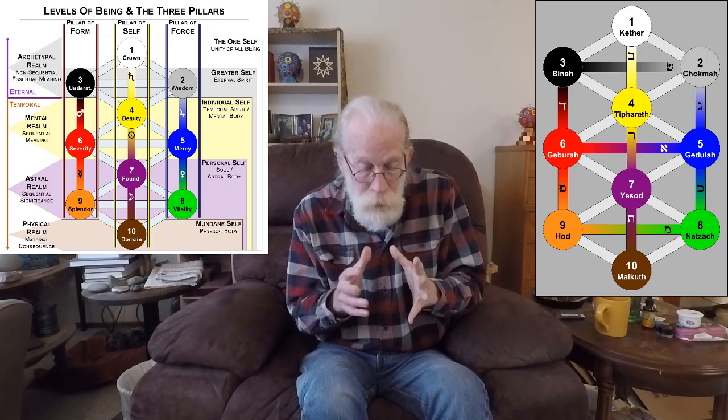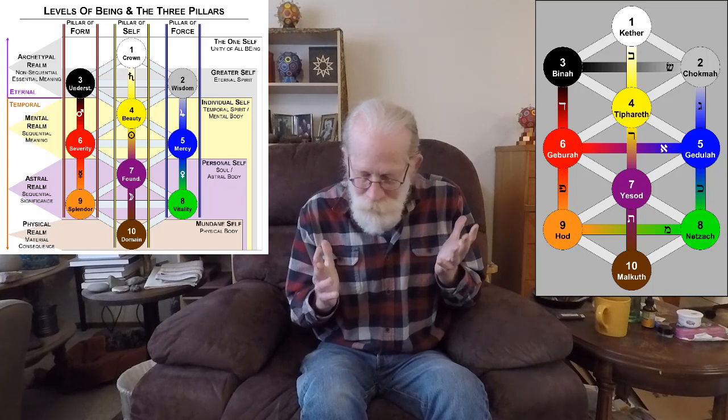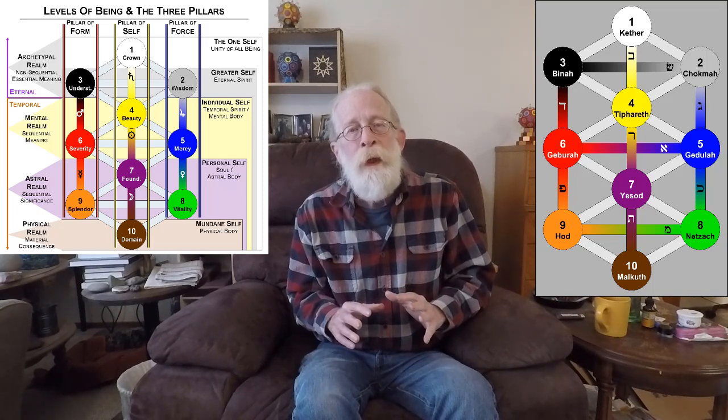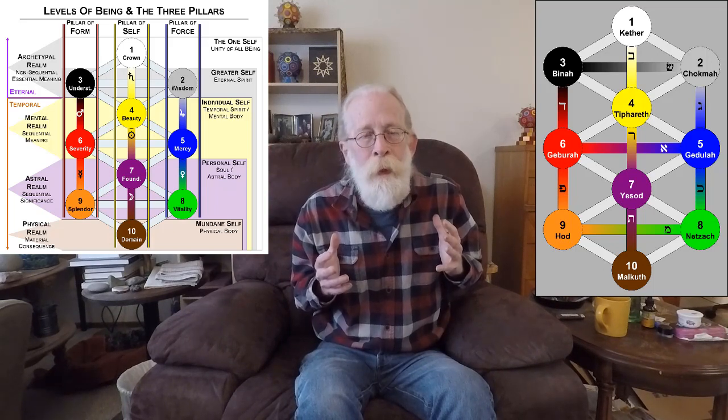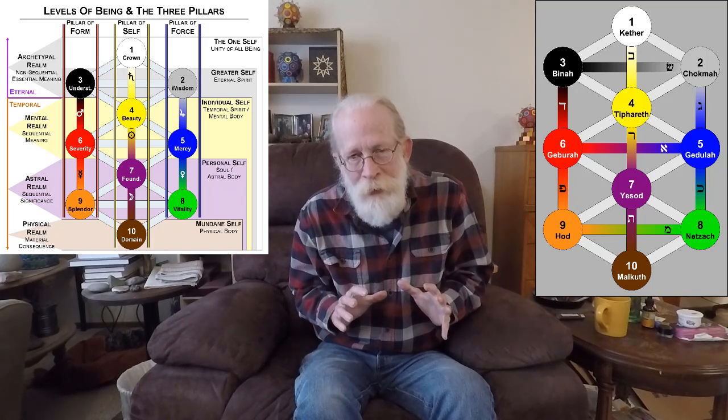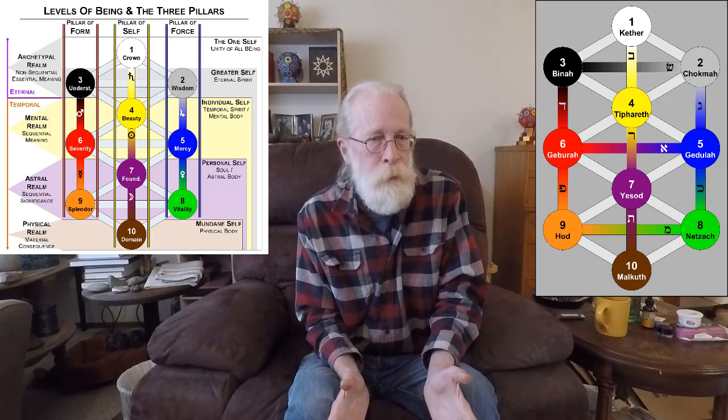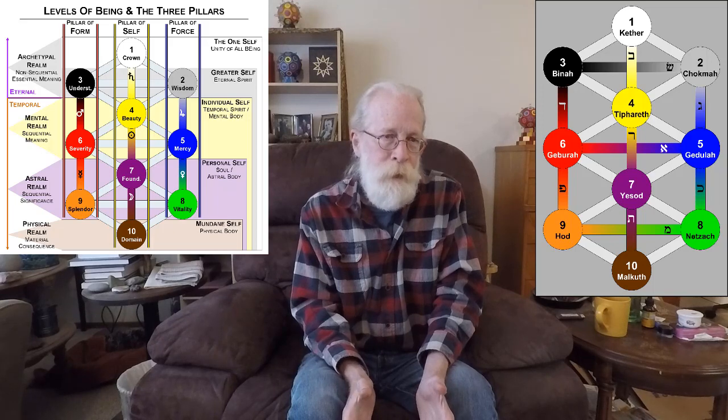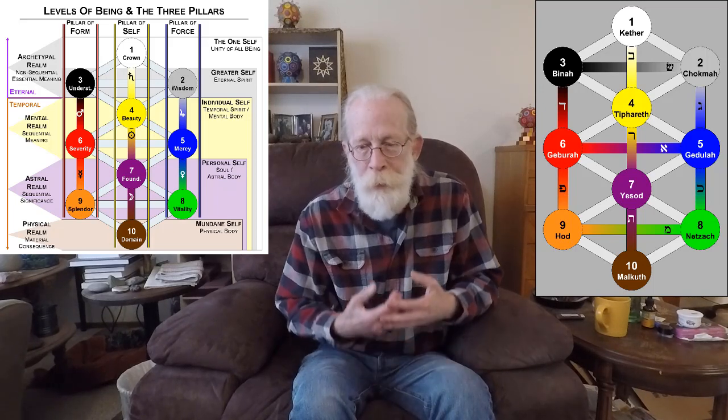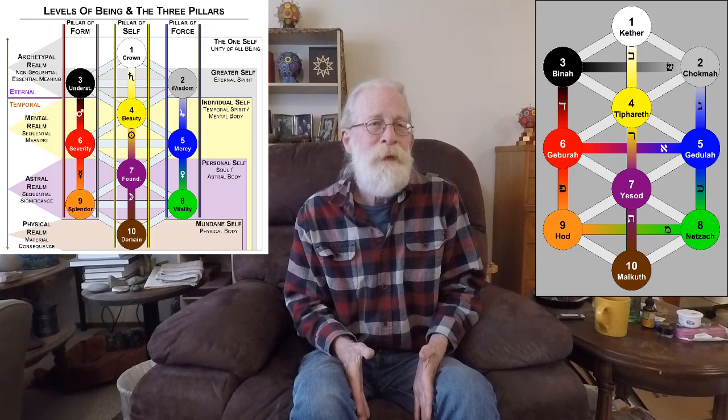Then that solitary self, that little reflection of the I, passes its light down into the sentient self through the path of Resh, the Sun. It casts its light as sunlight into the astral realm. It creates the astral realm out of its own sunlight, essentially. And that path is just that. It's radiant. It radiates. It warms everything it touches.